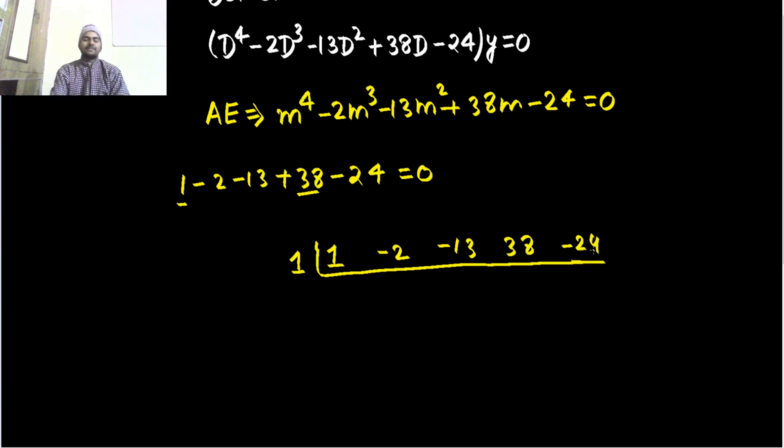This is the synthetic division method, very helpful when powers are higher. Write 0 here, add to get 1. Multiply 1 by 1 to get 1. Add again. Multiply by -1 to get -1. Keep adding to get -14.